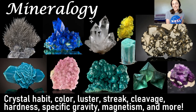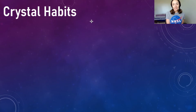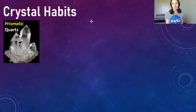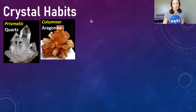So the first characteristic we'll talk about is crystal habit. There are a few different types of crystal habits I want to talk about, and these include prismatic crystal habits, which is shown in minerals such as quartz. Then we have columnar crystal habits, and this is an example of columnar crystal habit shown in aragonite.